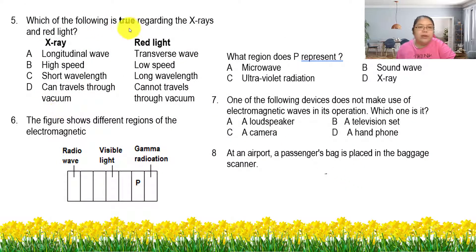Question five. Which one is true for X-ray and red light? Red light means visible light. X-ray is longitudinal? No, so A is wrong. High speed, low speed? Wrong. Both speeds must be the same. Short wavelength, long wavelength? Yes, because X-ray is high frequency, so the wavelength becomes shorter. The answer should be C.